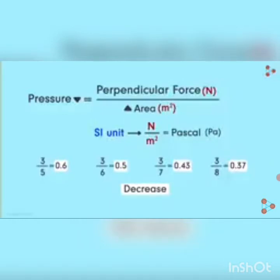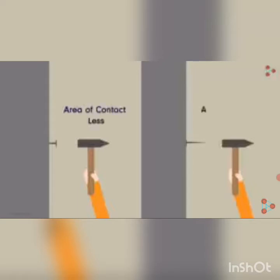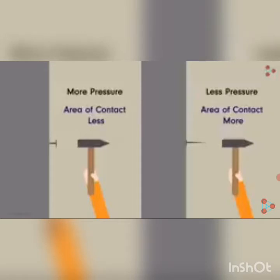With this knowledge, let's return to the nail-and-wall example. The force is applied perpendicular to the surface of the wall — the nail meets the wall at 90 degrees. The tip of the nail has a very small area compared to its flat surface, greatly reducing the area of contact with the wall. Hence, the pressure applied by the tip on the wall is greater, which is why the tip penetrates the wall easily.